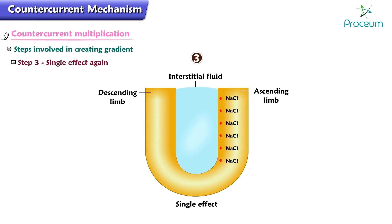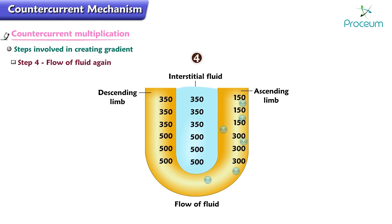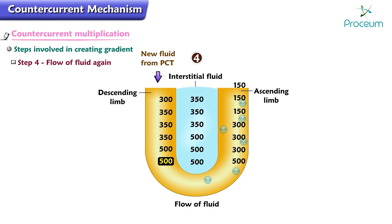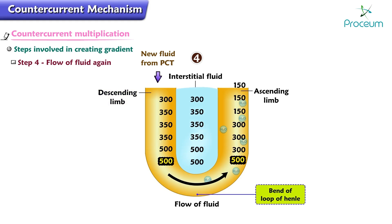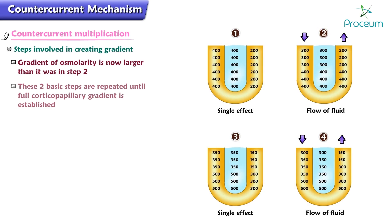Step three is the single effect again. Sodium chloride is reabsorbed out of the ascending limb and deposited in the interstitial fluid, and water remains behind in the ascending limb. The osmolarity of the interstitial fluid and descending limb fluid increases, adding to the gradient established in previous steps, while the osmolarity of the ascending limb fluid decreases further. Step four is the flow of fluid again: new fluid at 300 milliosmoles per liter enters the descending limb, pushing high-osmolarity fluid toward the bend and displacing fluid from the ascending limb, further enlarging the gradient.